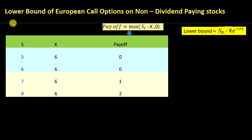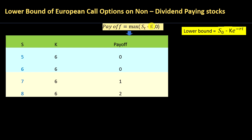We are going to have a quick look at the lower bound of European call options on non-dividend paying stocks. For a call option, it is only valuable when the underlying price — in this case the stock price — moves beyond the strike price. Since we are looking at European call options, at maturity, if the stock price has moved beyond the strike, the call option is valuable and you will exercise it. If not, the call option is not valuable and you will not exercise it.